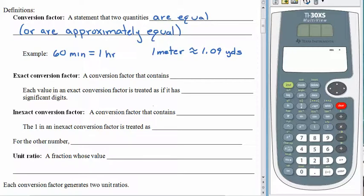An exact conversion factor is a conversion factor that contains an equals sign — for example, 60 minutes is exactly one hour. Every value in an exact conversion factor is treated as if it has infinitely many significant digits.